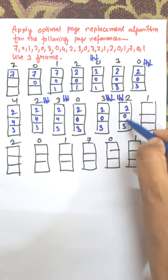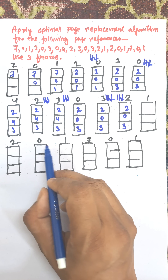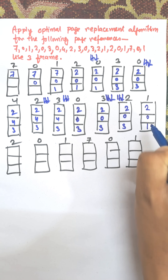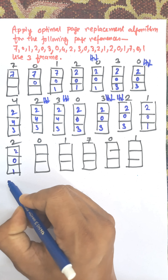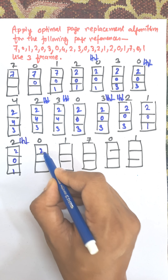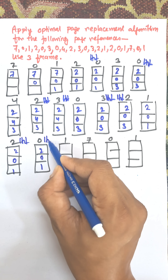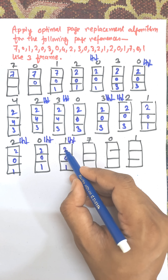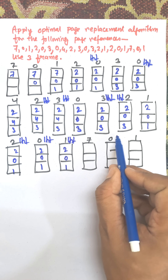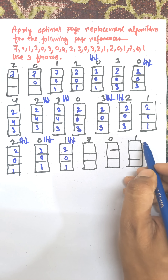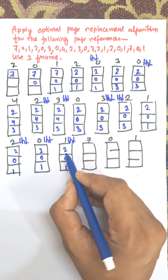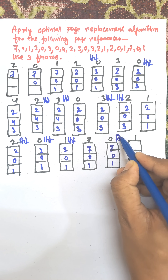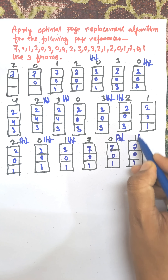From frames 2, 0, 3 — looking ahead, 2 is found and 0 is found, but 3 is not available in the list. So 3 will be replaced by 1. Then 2 is available — that is a hit. 0 is already there — that is a hit. 1 is already there — that is a hit. From 2, 0, 1 — 0 is found and 1 is found — that is a hit.